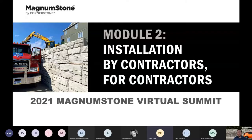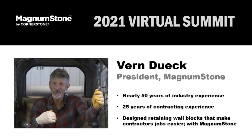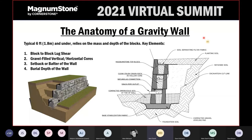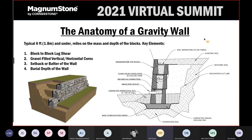Next, Verne Duick will talk about the installation process for Magnum Stone — a product made by contractors for contractors, and Verne is that contractor. Verne started in the hardscape industry installing pavers and segmental retaining walls in the early 1970s, working in Vancouver and Seattle. His company was installing about 500,000 square feet (50,000 square meters) of pavers and about 100,000 square feet (10,000 square meters) of walls every year. He learned a lot during that time when the industry was very young and information was limited.